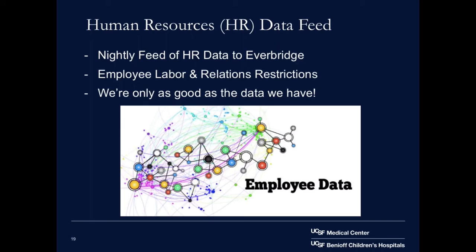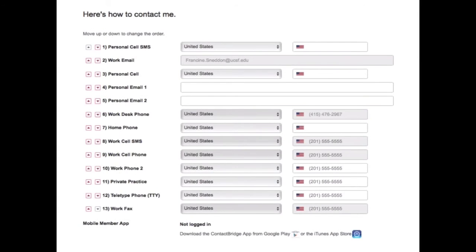We also have a nightly data feed from our human resources system to Everbridge. Due to restrictions from our employee labor and relations department, we were only allowed to pull in work contact information. All personal contact modalities like home phone or cell phone could only be provided via an opt-in process. Our success is largely dependent on how good our data is, so to help ensure employee information was updated at the source — our HR system — we provided a self-service directory that allowed employees to update their contact information.